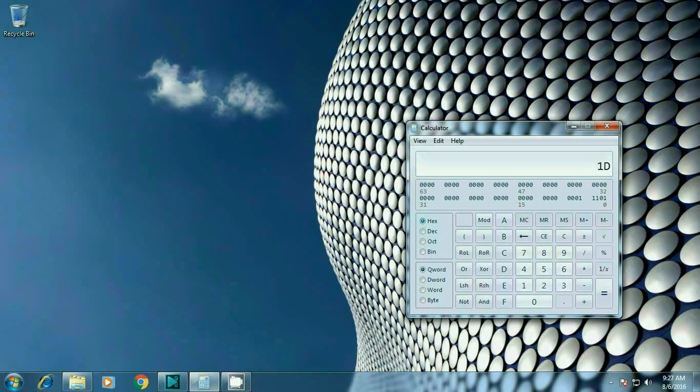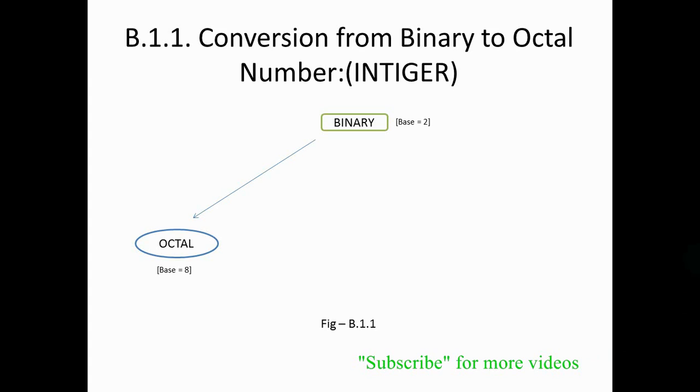Now select hex radio button and here comes hexadecimal equivalent of decimal 29 and the number is 1D. So our calculation is correct. In next video I am going to discuss about binary to octal conversion. Thank you.